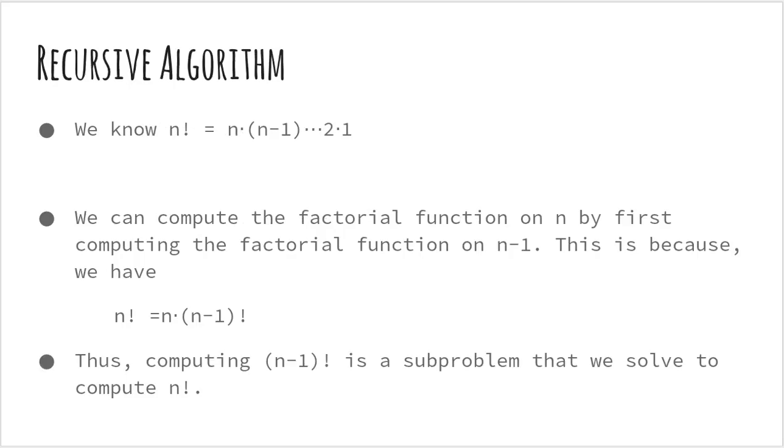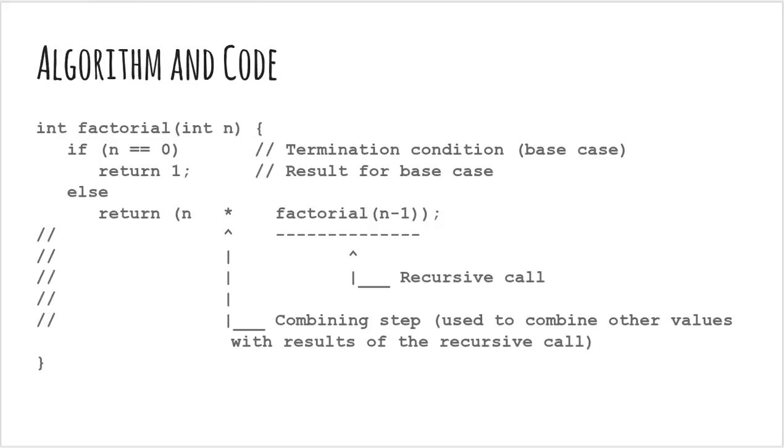Alright. Now, let's think about the recursive algorithm to compute n factorial. Can you think of how to divide this algorithm such that it utilizes previously computed instances? We can compute the factorial function on n by first computing the factorial function on n-1. Because n factorial is nothing but (n-1) factorial into n. Thus, computing (n-1) factorial is a subproblem that we solve to compute n factorial. This leads us to a very elegant program to compute a factorial recursively.